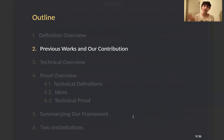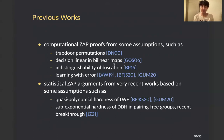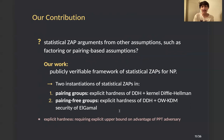There have been constructions of computational ZAP proofs from various assumptions, such as trapdoor permutations, the decision linear assumption in bilinear maps, indistinguishability obfuscation, and learning with errors. From very recent works, there have been constructions of statistical ZAP arguments from assumptions like quasi-polynomial hardness of LWE and exponential hardness of DDH in pairing-free groups. The question is whether we can have constructions of statistical ZAP arguments from other assumptions — especially those used for computational ZAP proofs — such as factoring or pairing-based assumptions.